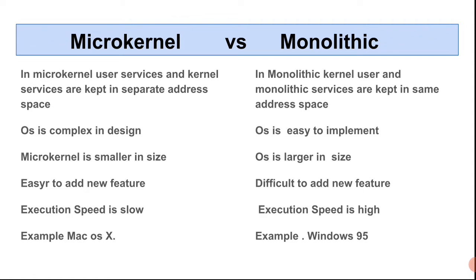In the case of monolithic kernel, user and kernel services are not kept in the same address space — wait, they are kept in the same address space. That is why the monolithic kernel architecture is very simple compared to the microkernel.